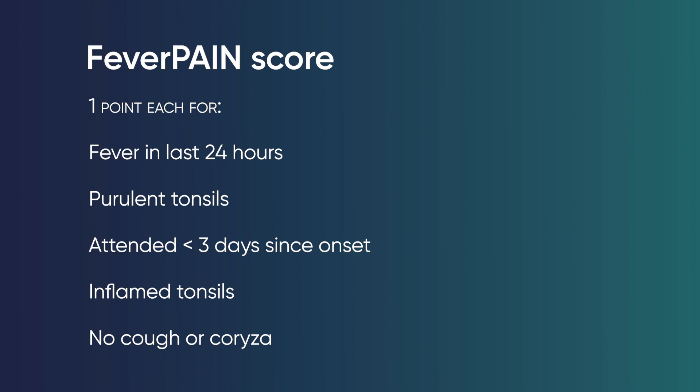The FeverPAIN score is a useful scoring system to inform the decision to give antibiotics in tonsillitis. You can score one point for fever in the last 24 hours, purulent tonsils, attended less than three days since the onset of symptoms, inflamed tonsils, and the absence of cough or coryza.